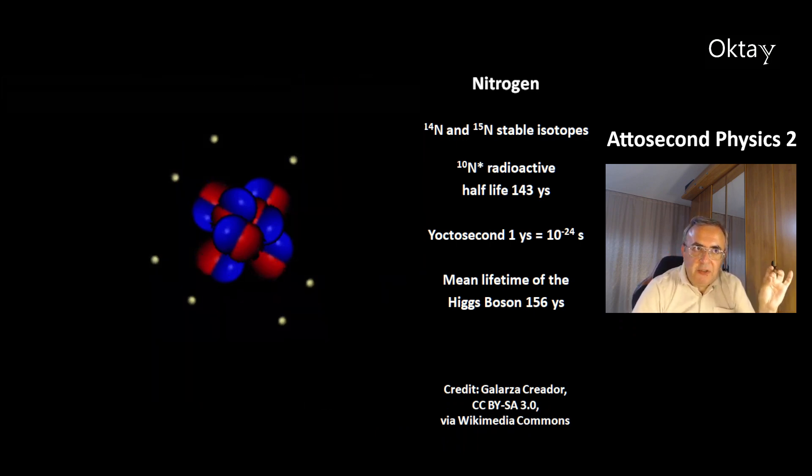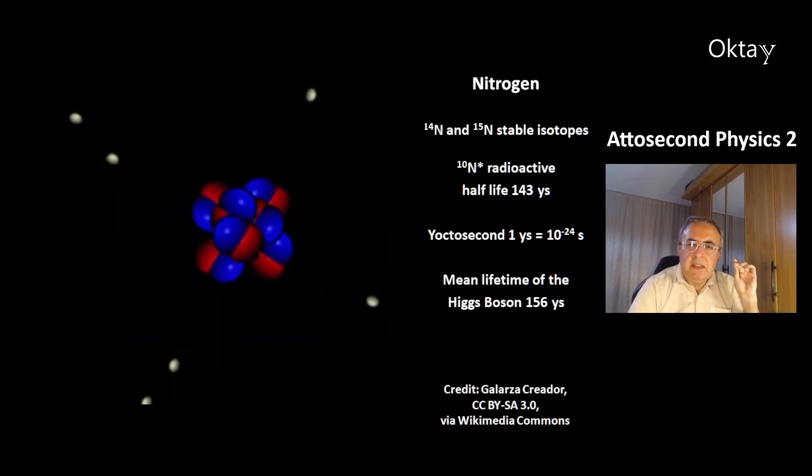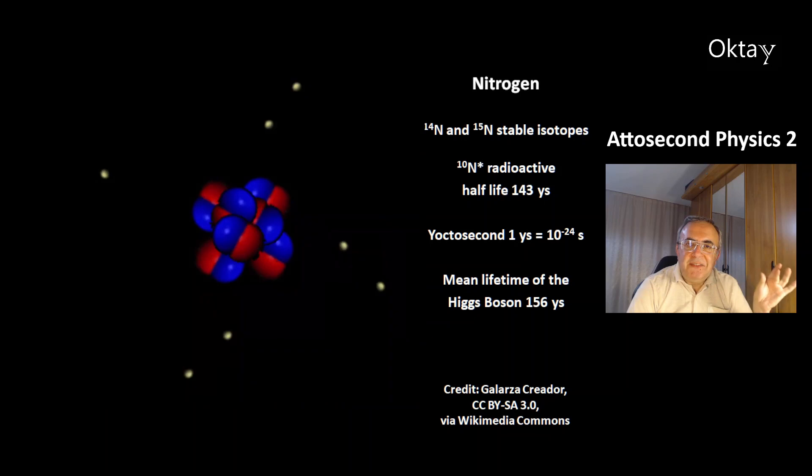This is a nice animation of the element nitrogen, atomic number 7. There are two stable isotopes, 14 and 15. And there is another radioactive isotope 10 with 7 protons, 3 neutrons. There is a very short half-life of 143 yoctoseconds. One yoctosecond is 10 to the minus 24 seconds.